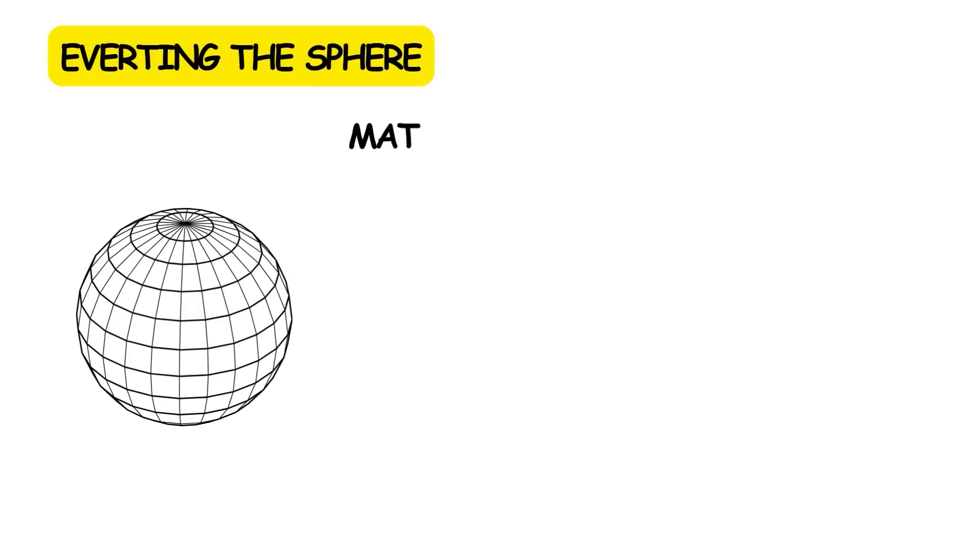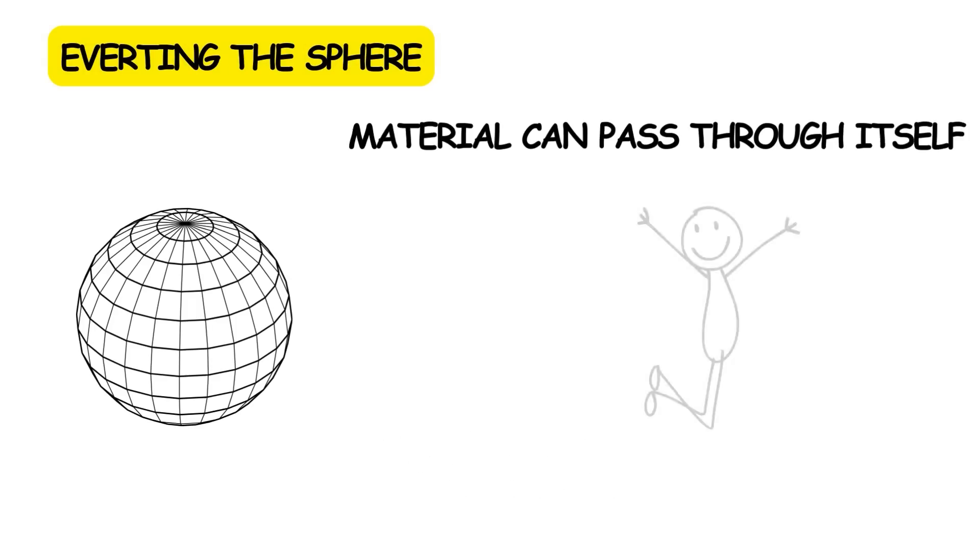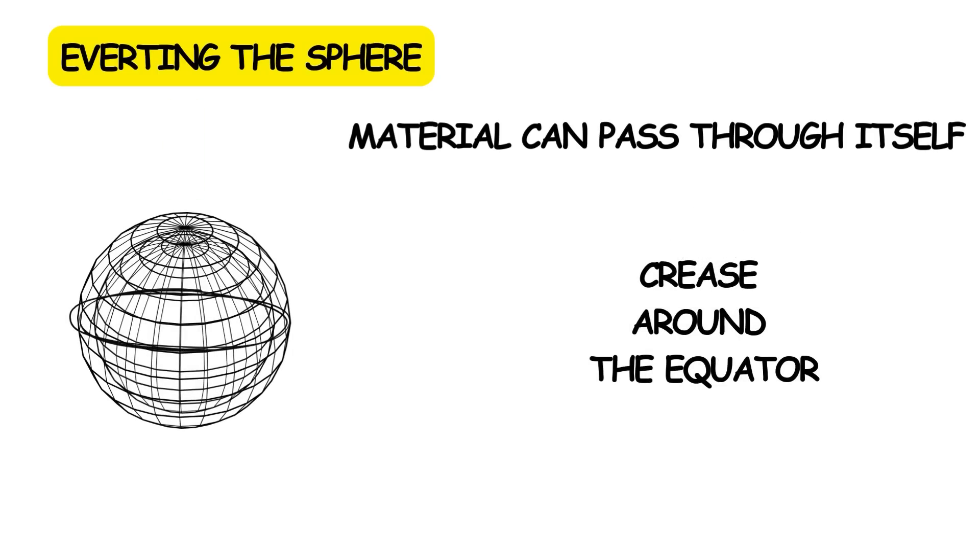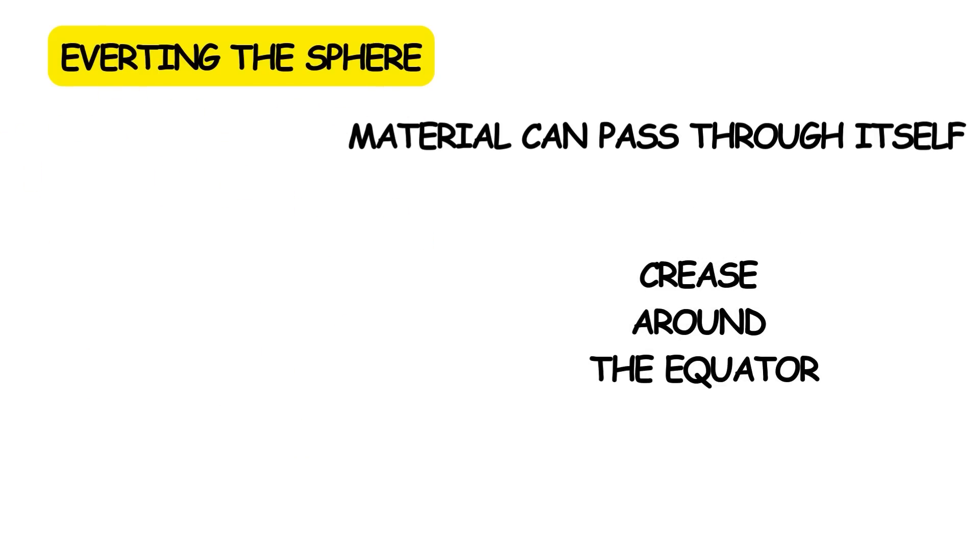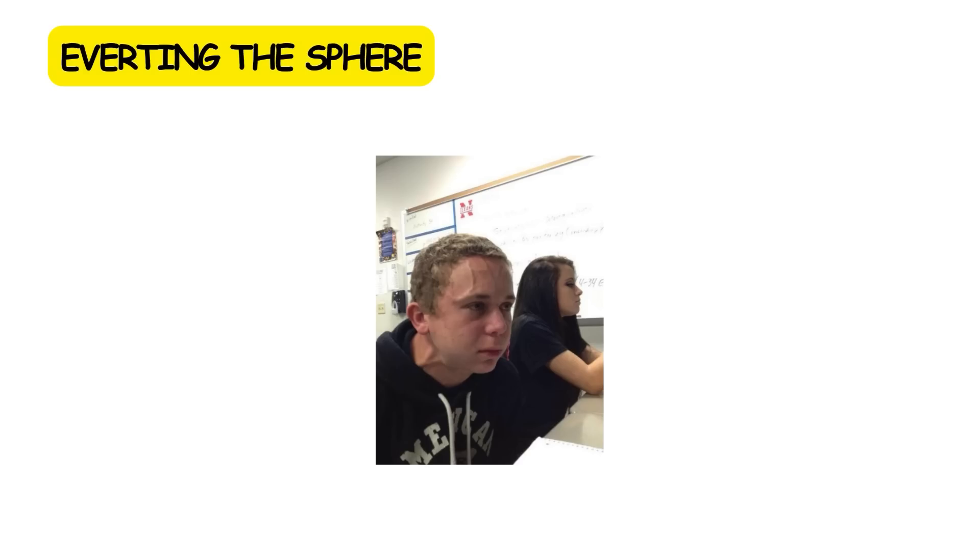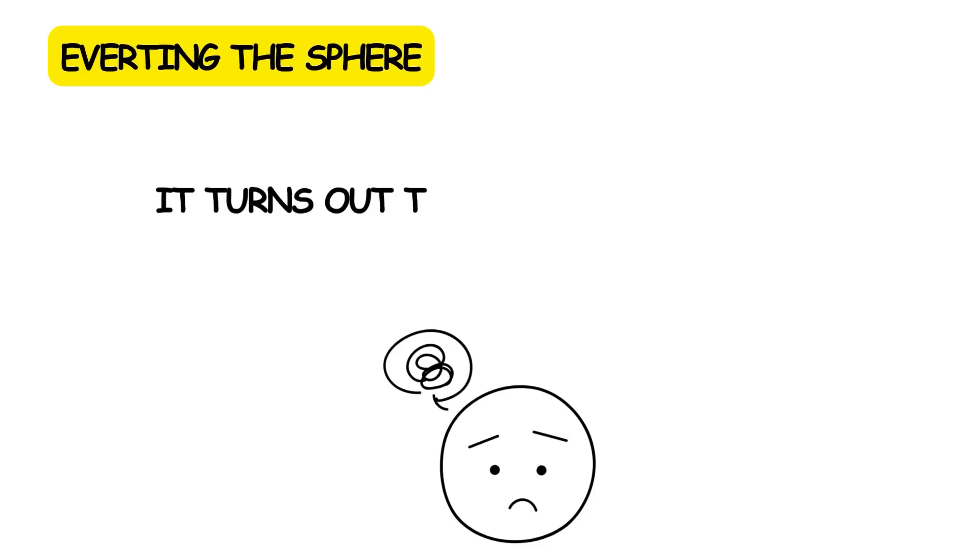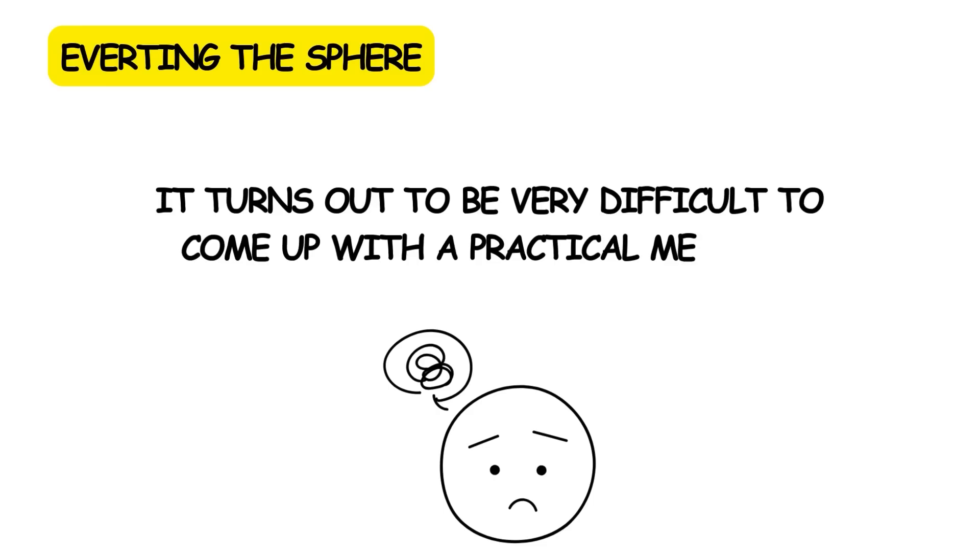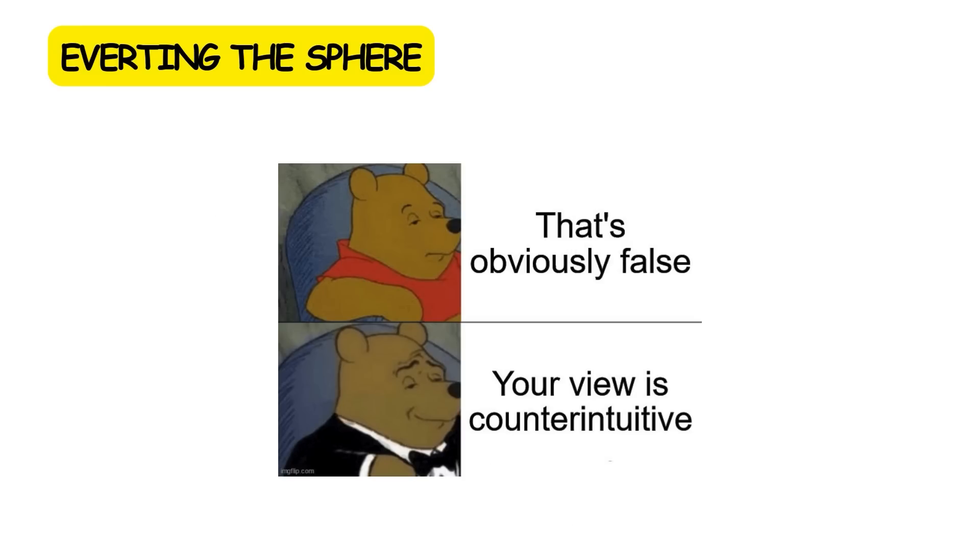The goal is to turn the sphere inside out, known as everting the sphere. At first glance, since the material can pass through itself, this may seem easy to do, by just pushing the two hemispheres through each other. However, this creates a crease around the equator, destroying the sphere. You may try some other approaches, but in fact, it turns out to be very difficult to come up with a practical method.